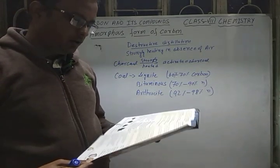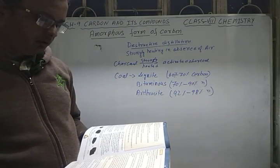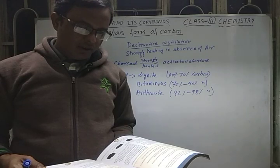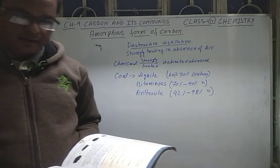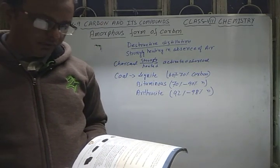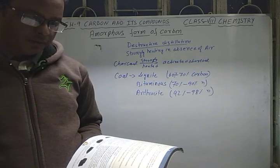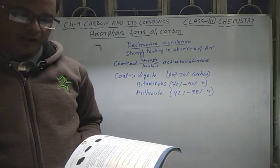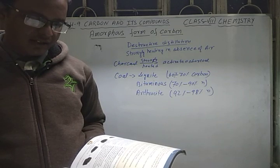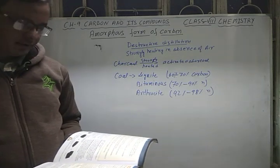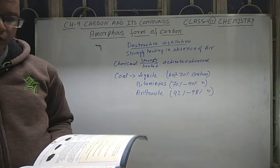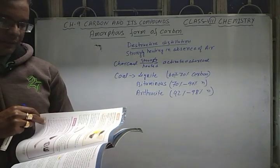The uses of coal are varied. It is used as a fuel for industrial and domestic purposes. It is used to prepare coke, coal gas, and coal tar by destructive distillation. Coal is a source of organic compounds such as benzene and naphthalene, and is used in the manufacture of synthetic dyes, perfumes, drugs, textiles, and fertilizers.